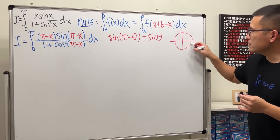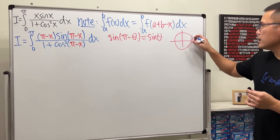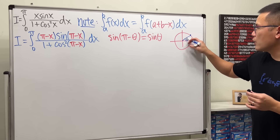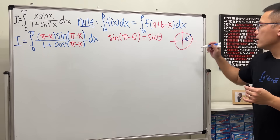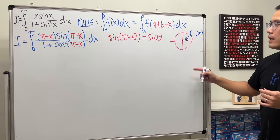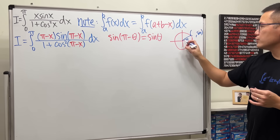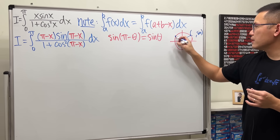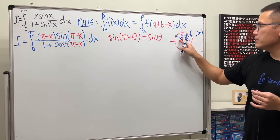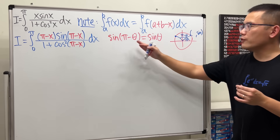Let's say this is the point at angle θ, and sine of θ is the y-value. Now π − θ is just the reflection — you go the other way on the unit circle. That reflected point has the same y-value, so sin(π − θ) = sin(θ).